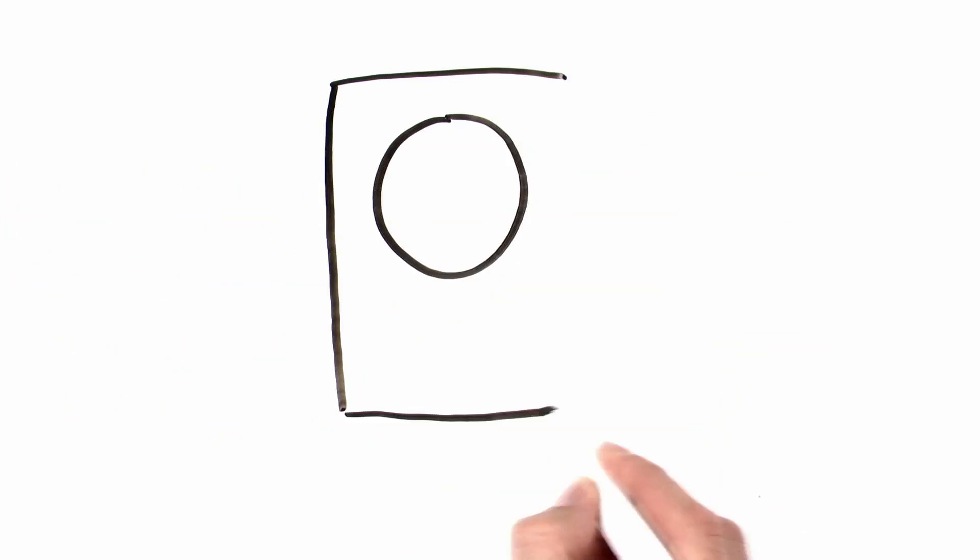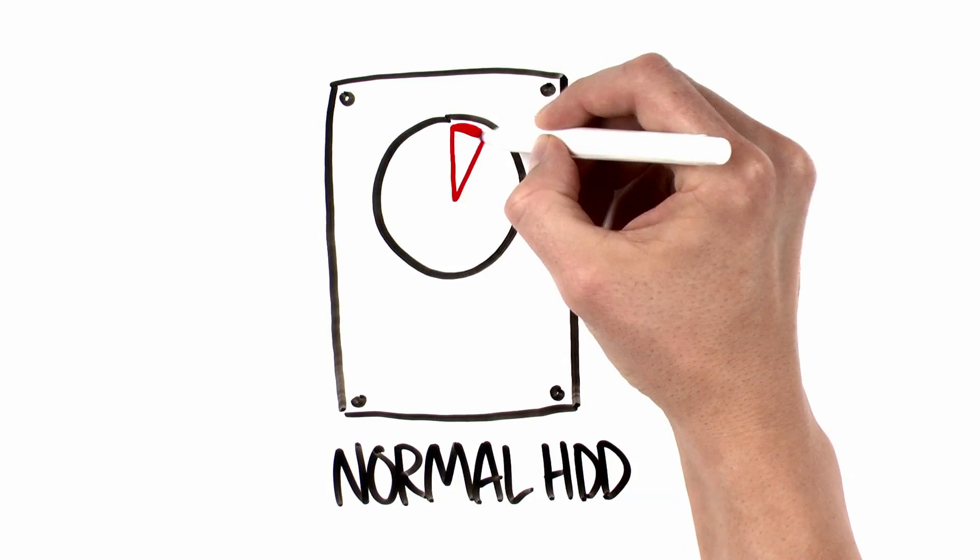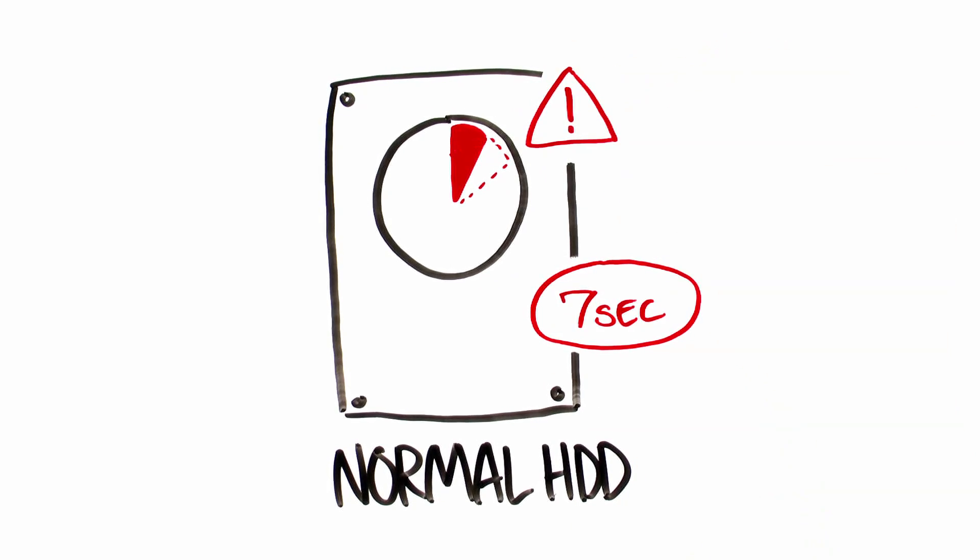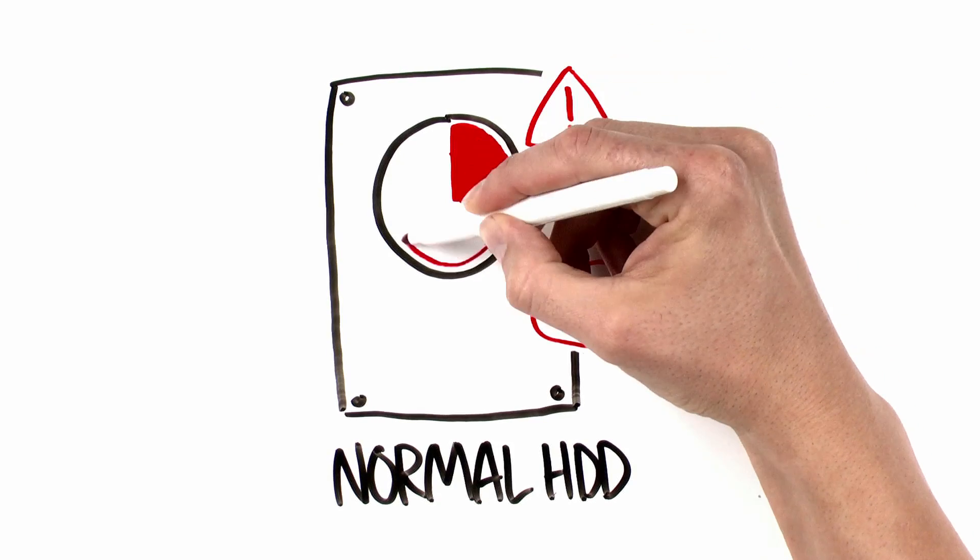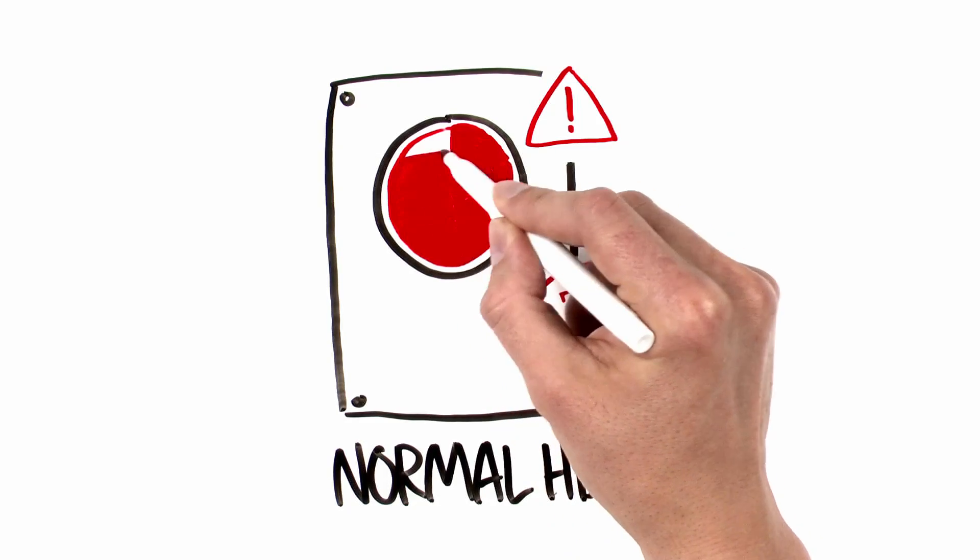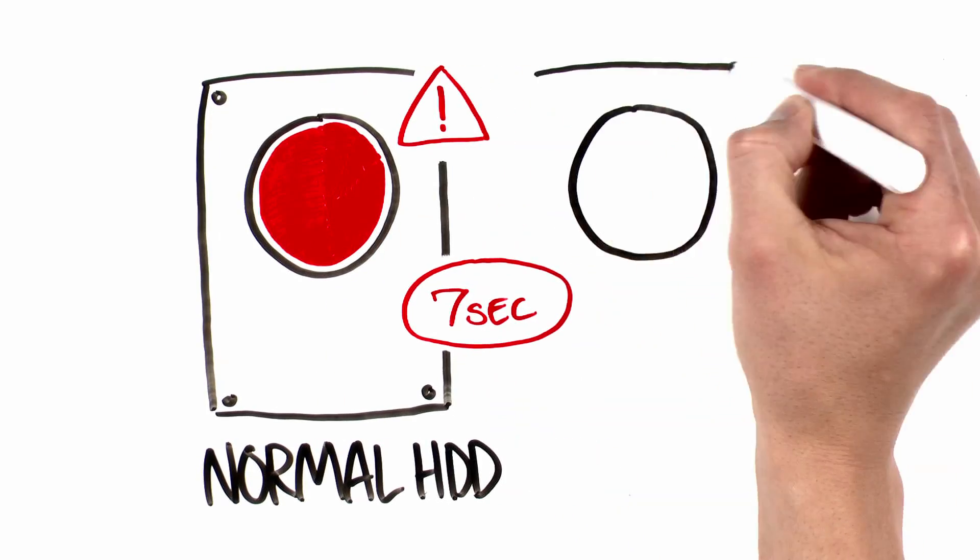In a typical NAS system, should recovering data from a drive take longer than 7 seconds, the RAID assumes the drive dropped out of the array, which prompts it to begin the time-consuming task of rebuilding the entire drive. But with error recovery control,